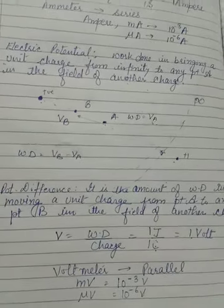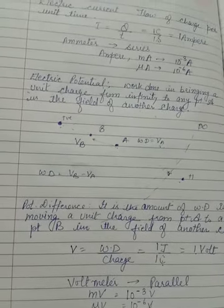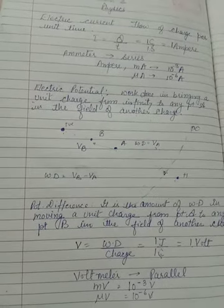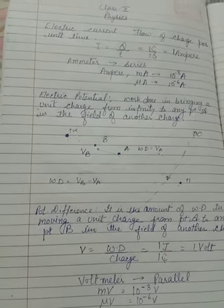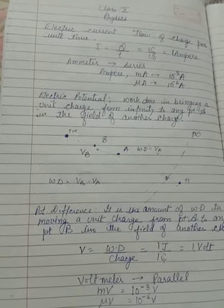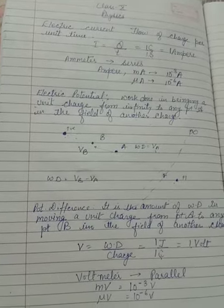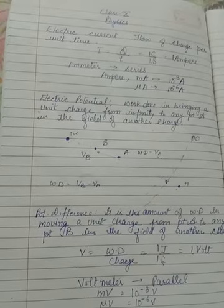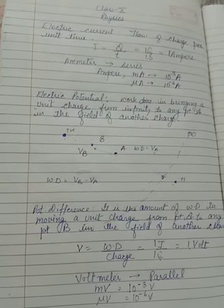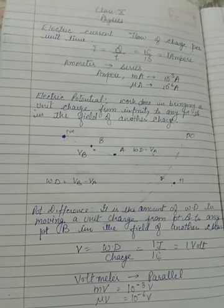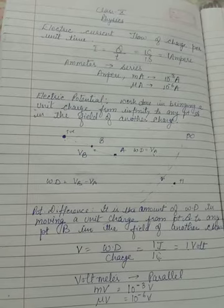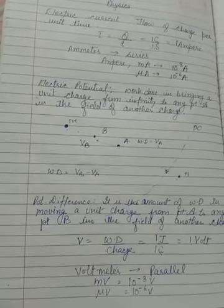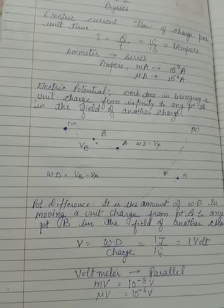So this is what we wanted to discuss today. We have discussed electric current, electric potential, and potential difference — their definitions, formulas, SI units, and the devices used to measure them along with their circuit connections. Revise well. Wish you good luck. Thank you.